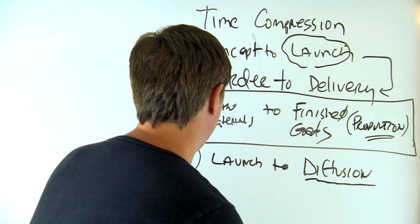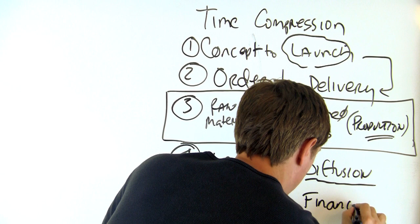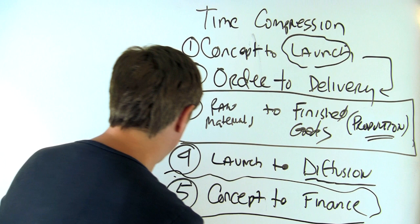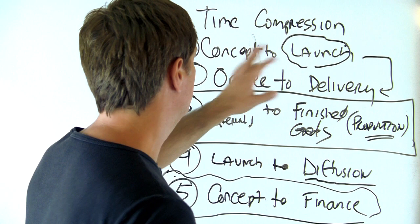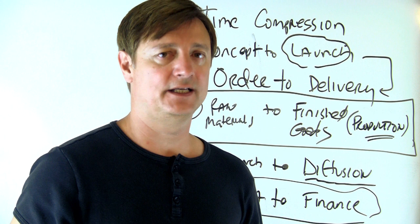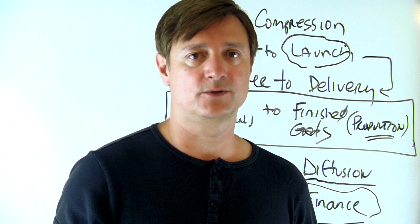The fifth component is concept to finance. This is much more applicable to startups than Fortune 1000 companies, and it's the one I see the most problems with. There are a lot of topics out there on time compression and increasing speed in your business, but in reality concept to finance is something that's lacking, because there are still a lot of inefficiencies for startup entrepreneurs when they have a great idea and it takes them nine months to get financed.